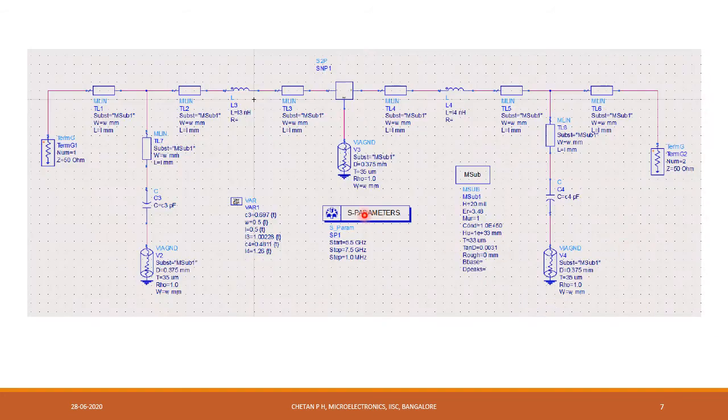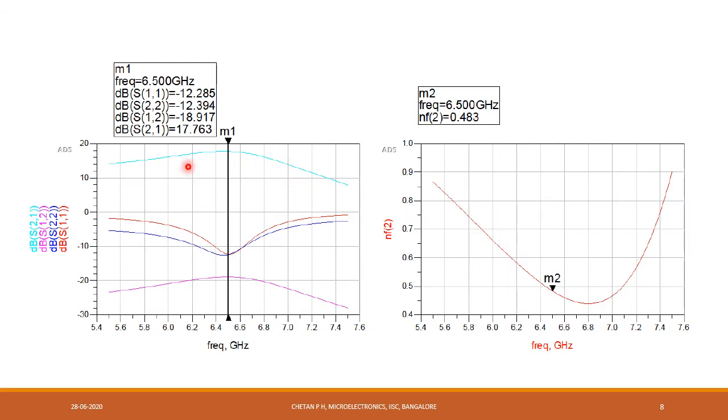After choosing an optimum point in the Smith chart, I have designed input matching and output matching circuit. These microstrip lines that you are seeing are nothing but the pads that I will be using for the soldering purpose. After every component, I will be using these microstrip lines for the soldering purpose. The width and length of this microstrip line is 0.5 x 0.5. Then after simulating it, you will get a value of S21 around 17.763 dB and a noise factor of around 0.483 dB.